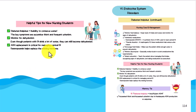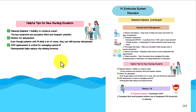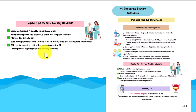Helpful tips for nursing students: diabetes insipidus is the inability to conserve water. The key symptoms are excessive thirst and frequent urination. Monitor for dehydration — even though patients with DI drink a ton of water, they can still become dehydrated. ADH replacement is critical in managing central DI, and desmopressin helps replace that missing hormone.